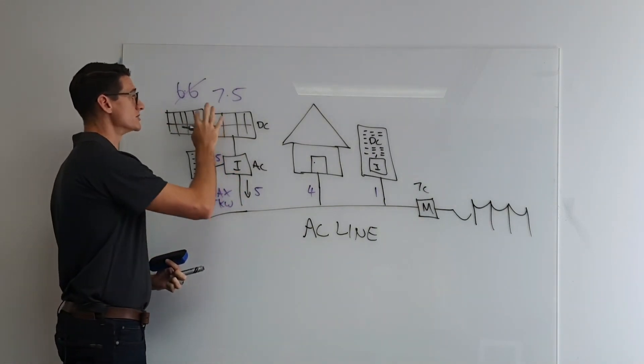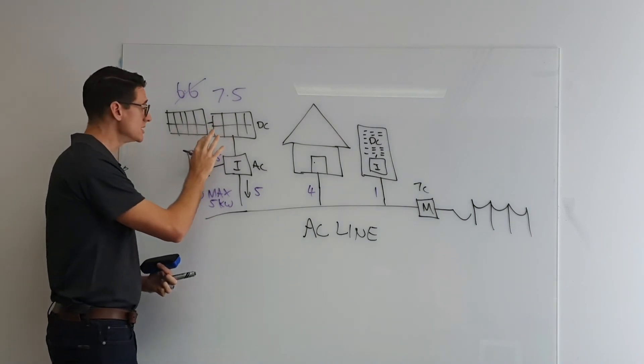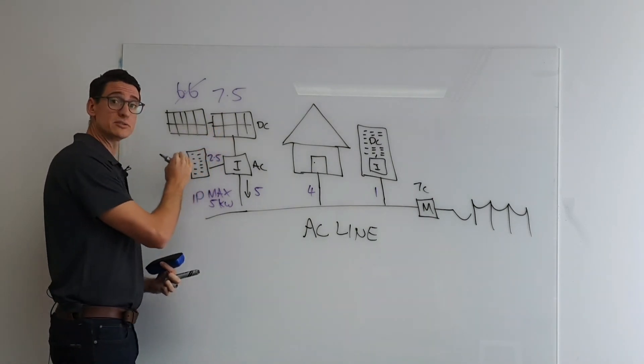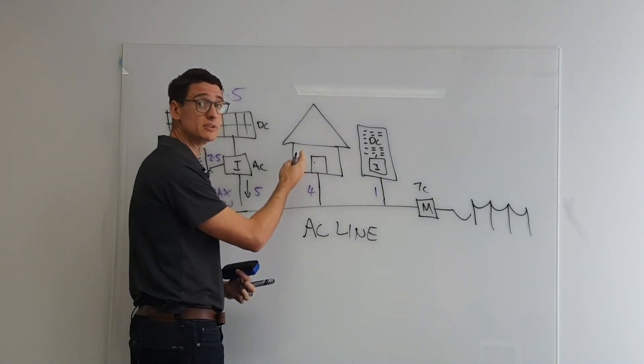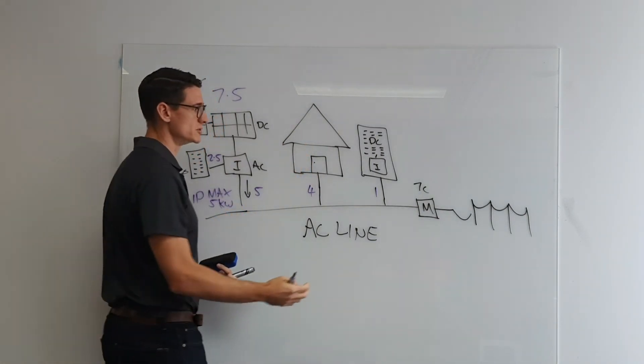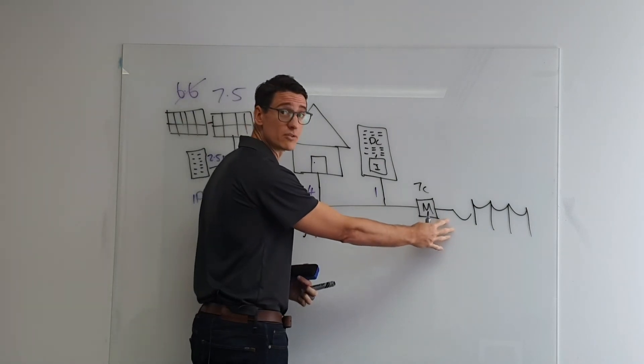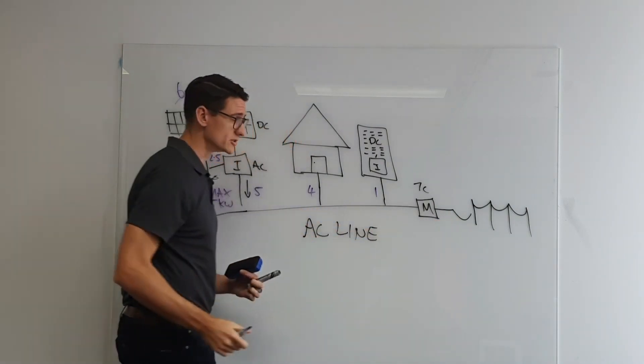Of course, when the panels start to go to sleep in the afternoons, then the energy that's been stored in the battery during the day will ultimately then trickle feed out to the home in the evenings. The idea behind this, of course, is reducing the energy that you're ultimately having to pay for, reducing your reliance on the grid as well.